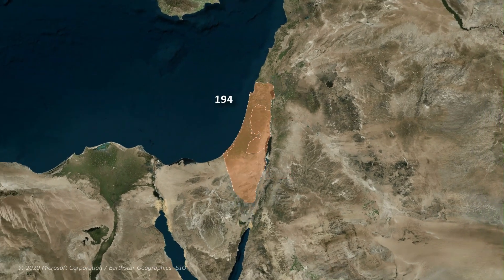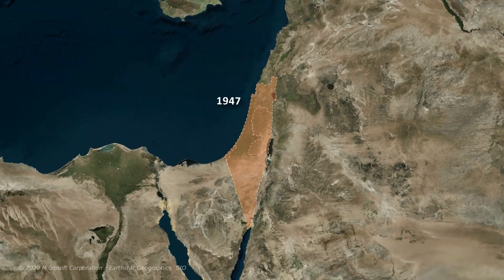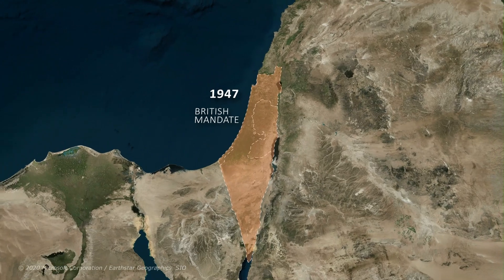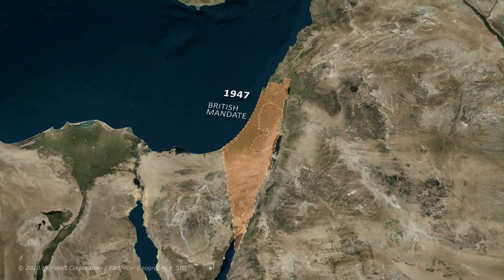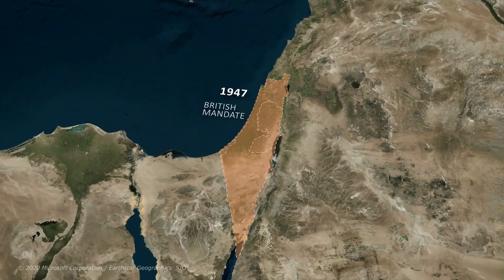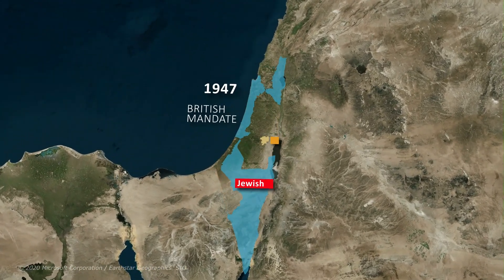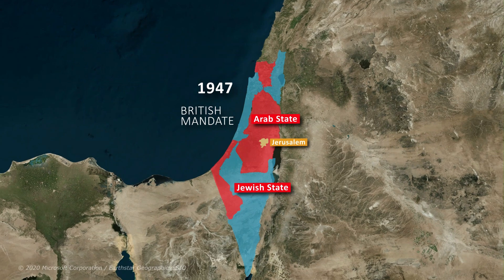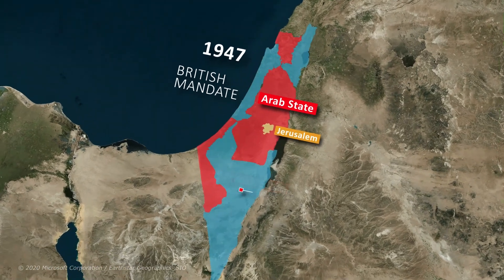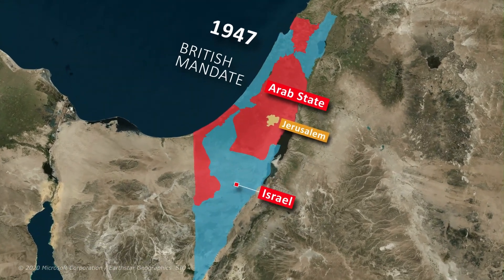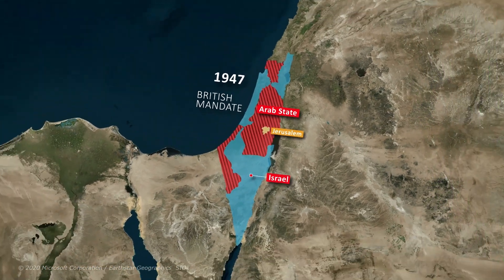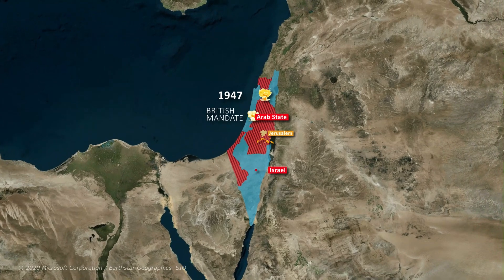In 1947, the United Nations proposed the partition of Palestine, which meant that Palestine should be split into a Jewish state and an Arab state. The Jewish side accepted and Israel was formed, but the Arab side rejected the proposal and war broke out in the region.